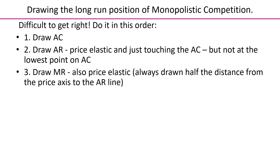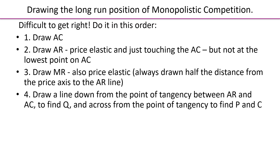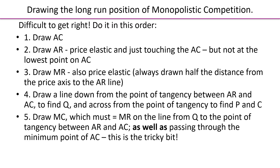Third, draw the marginal revenue curve — it will also be price elastic, and always draw the marginal revenue curve about half the distance between the price axis and the average revenue line. Once those are in place, draw a vertical line down from the point of tangency where AR and AC just touch, to find the quantity of goods being produced. Then draw across horizontally from that tangency point to the vertical axis to find the price and cost being charged.